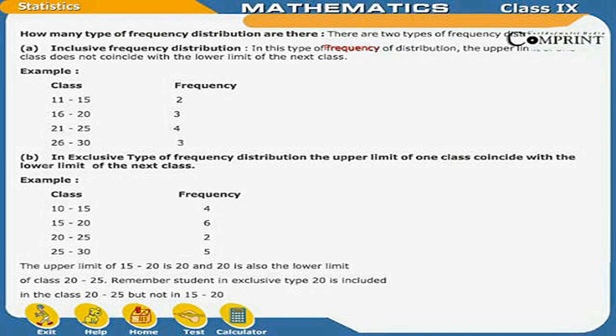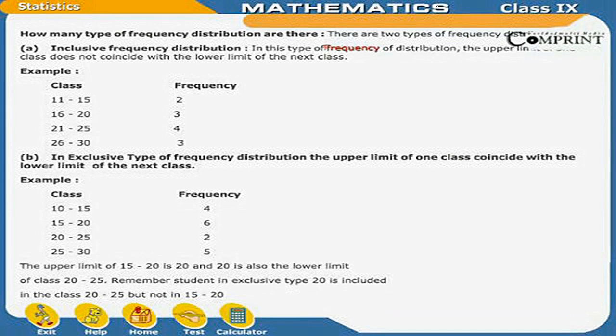How many types of frequency distribution are there? There are two types of frequency distribution. First, inclusive frequency distribution. In this type of frequency distribution, the upper limit of one class does not coincide with the lower limit of the next class. For example, Class 11-15 has Frequency 2.